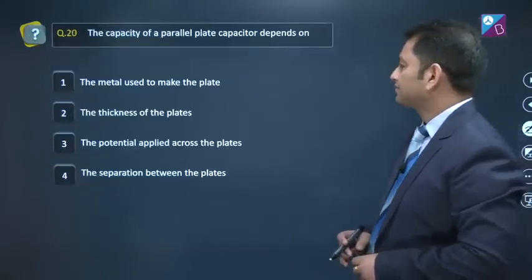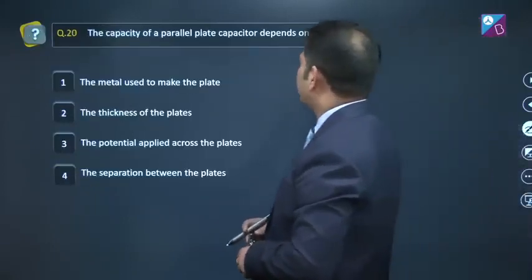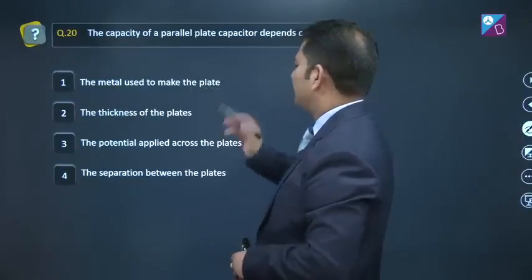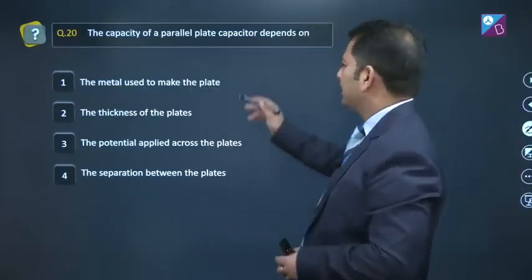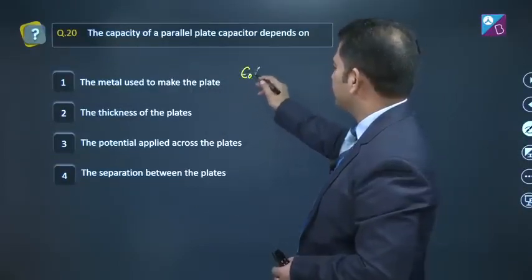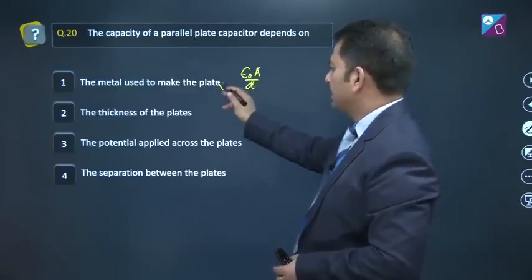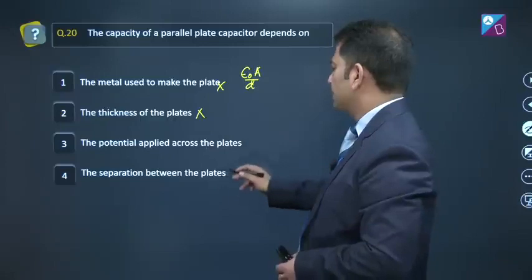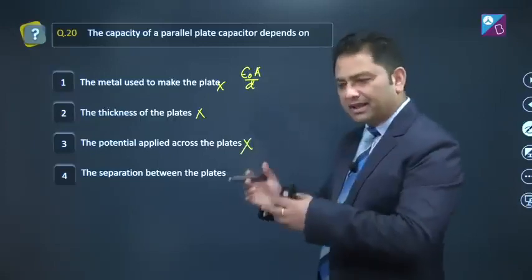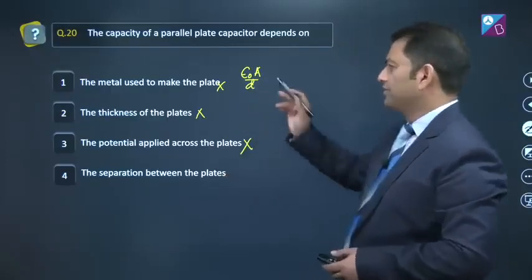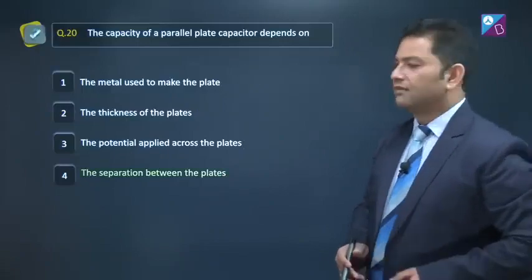Question number 20. Capacity of a parallel plate capacitor depends on: metal used to make the plate? No. Capacitance is epsilon naught A by d. Nature of metal, no dependence. Thickness, no dependence. Potential difference, it doesn't depend on this. Separation between the plates, yes. Option number 4.